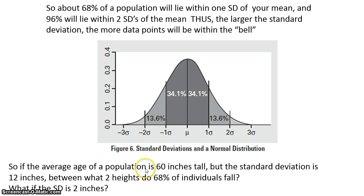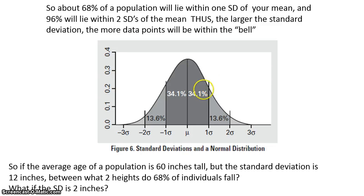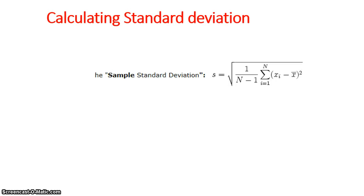So on the flip side, if we had a second experiment and the standard deviation this time was two inches, then we would know that 68% of our data now lies between 58 and 62 inches tall. It would tell us that our data is much closer to the average — that our data points are clustered more closely around the average than if our standard deviation is a larger number.